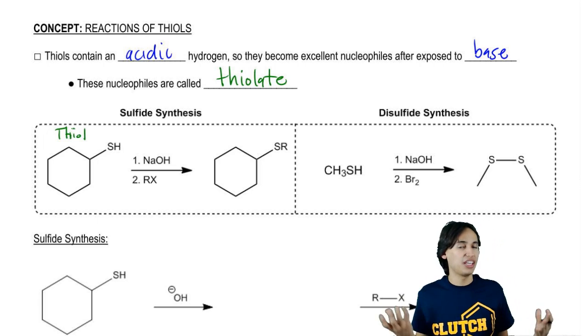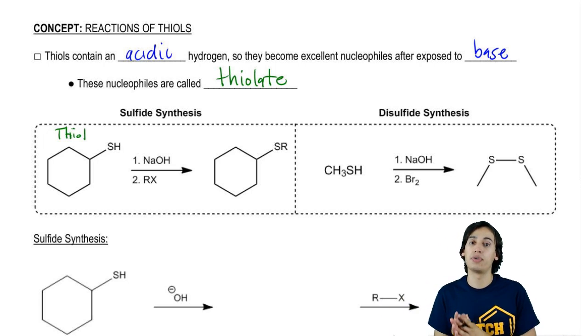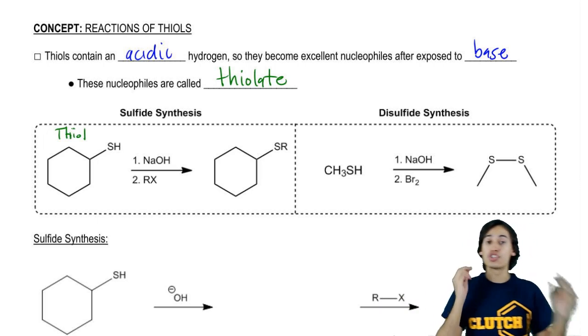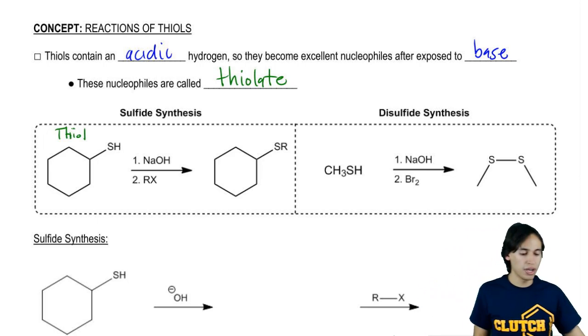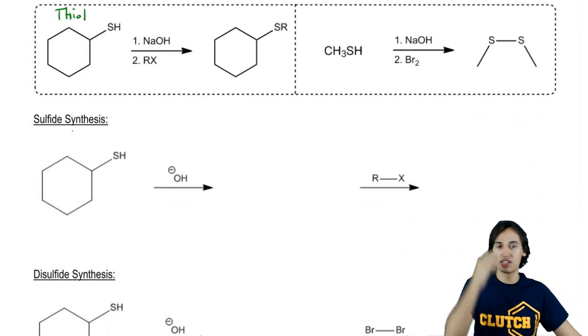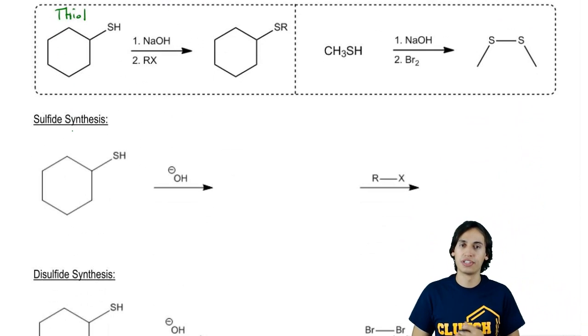Then that thiolate anion performs an SN2 reaction on an alkyl halide and alkylates. So what we wind up getting is a sulfide, basically the analog to an ether, just with an S instead of the O for the ether. Let's go ahead and look at how this full mechanism, let's draw it out and make sure that we're all on the same page.